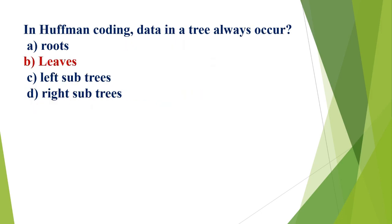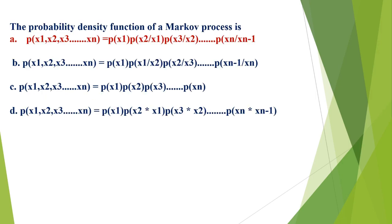In Huffman coding, data in a tree always occurs at A) roots, B) leaves, C) left subtree, D) right subtree. The correct option is B, leaves. The joint probability density function of a Markov process is: option A) P(X1, X2, ..., Xn) = P(X1) · P(X2|X1) · P(X3|X2) · ... · P(Xn|Xn-1).